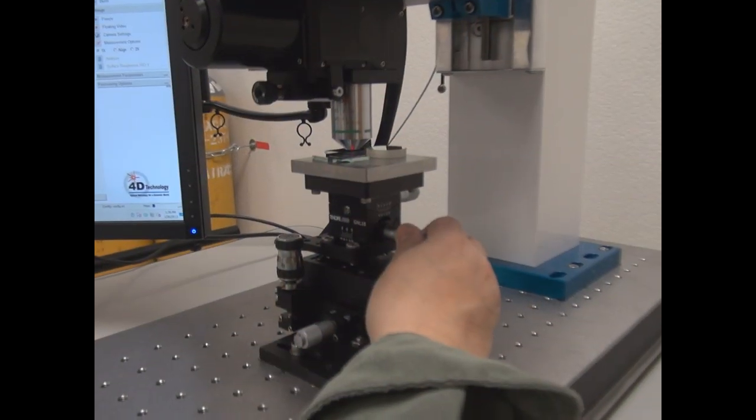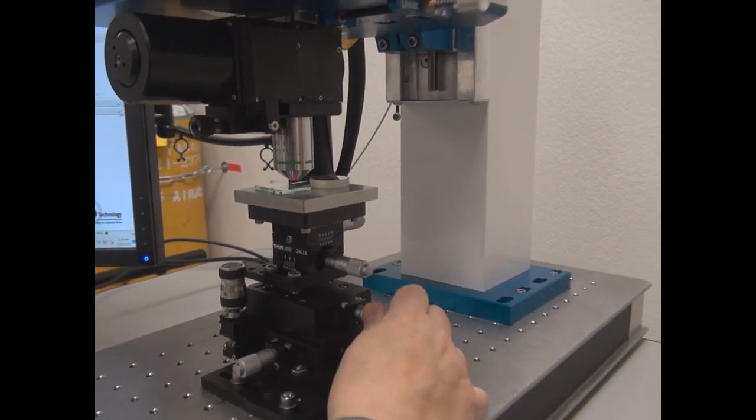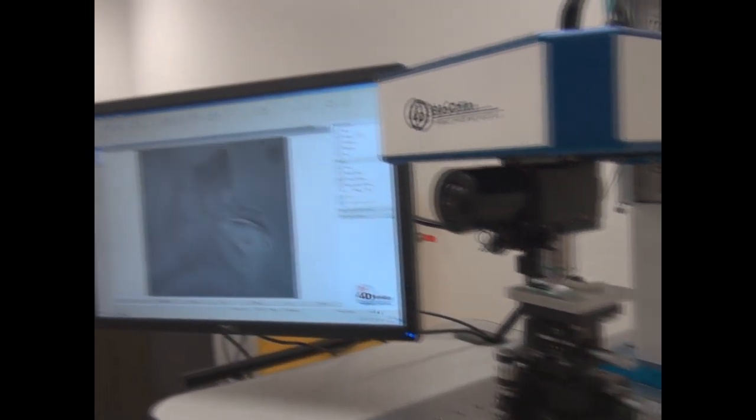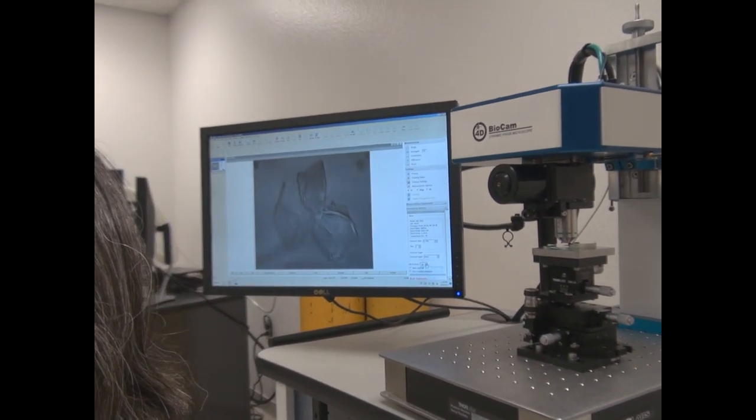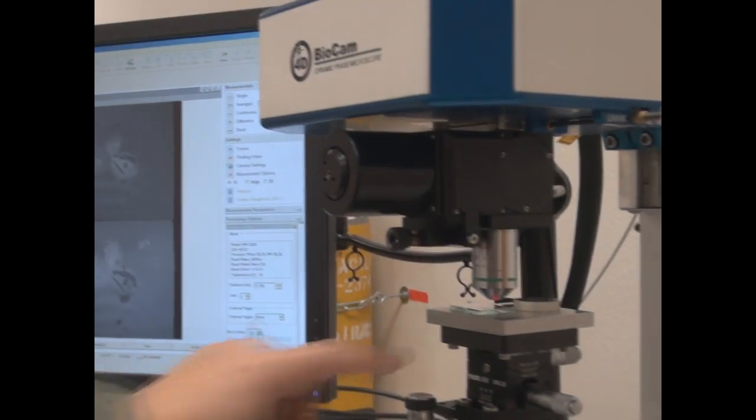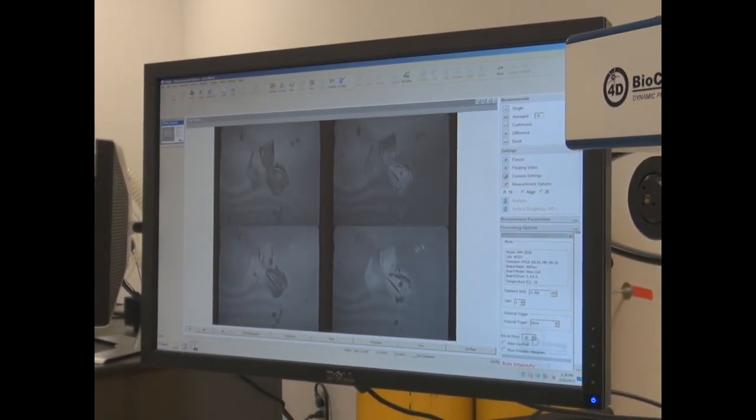I'm putting the sample on the stage and centering it. This is a human cheek cell recently removed from a human. Setting the exposure. What you're seeing is an interferogram and the flashing is caused by a little bit of vibration between this head and the stage. It's just a natural part of the interference - you're seeing motion on the order of a few nanometers.